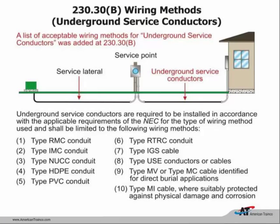Article 230 covers service entrances and provides a list of 10 acceptable underground wiring methods for installing your service. Some methods used for a long time are still included—rigid metal conduit, intermediate metal conduit, PVC—and they added high-density polyethylene and reinforced thermosetting resin conduit. Now there are only 10 methods to install that underground service.